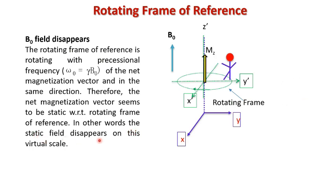In this manner the magnetization vector seems to be static with respect to the rotating frame of reference. In other words, the static field disappears. This seems to be static, and if omega — the precessional frequency — is equal to zero, then omega is proportional to B0. So B0 in this rotating frame of reference disappears or is frozen away, and this magnetization vector is static with respect to the observer on this virtual rotating frame of reference.